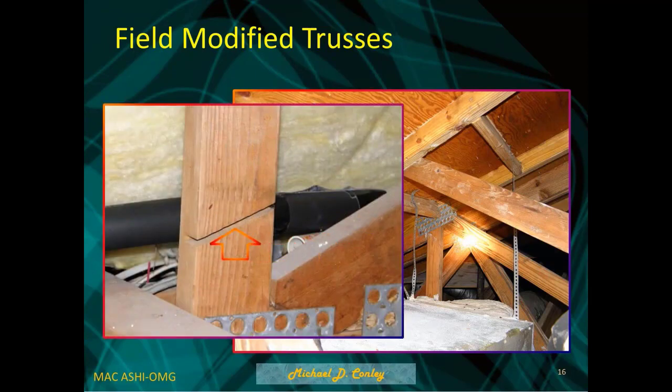That two-by-four is not going to function due to the fact that some of it's missing. Remember, these members are going to be in compression and in tension — the pulling apart. That's why you see these diagonals in trusses; they address compression and tension.